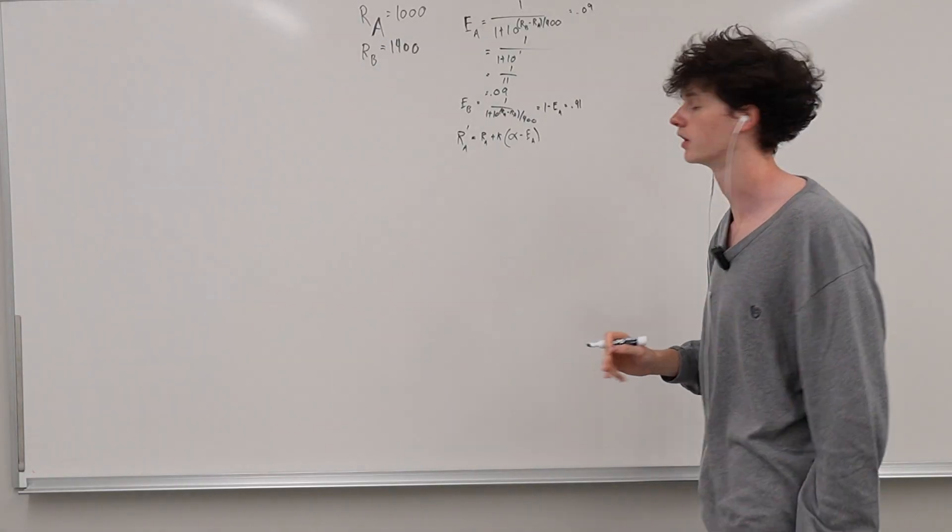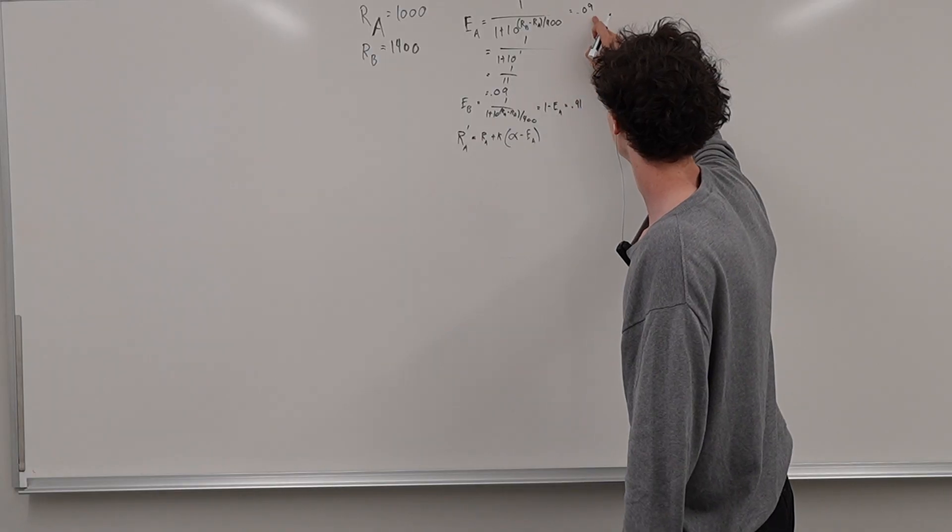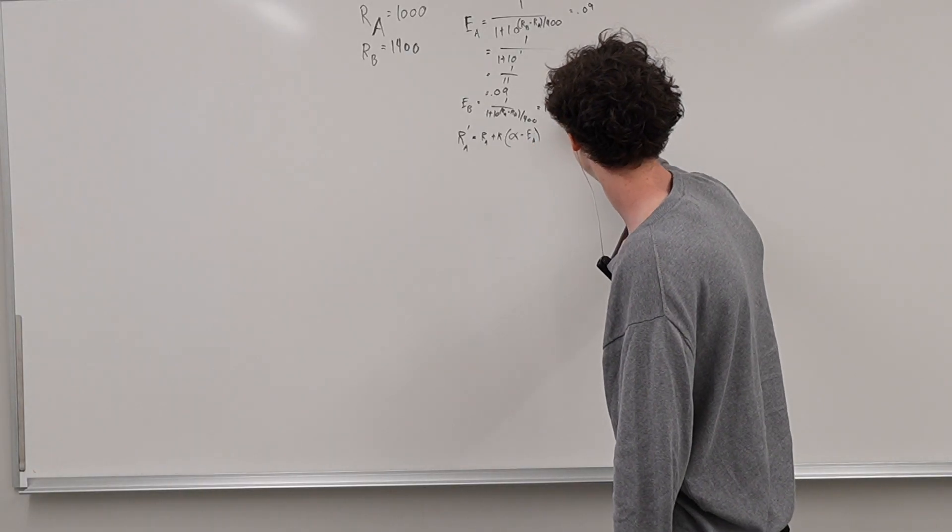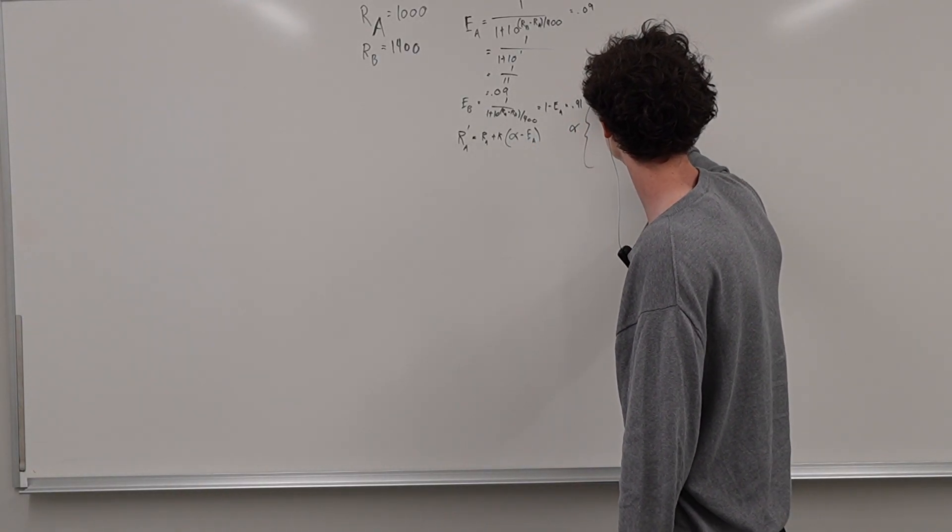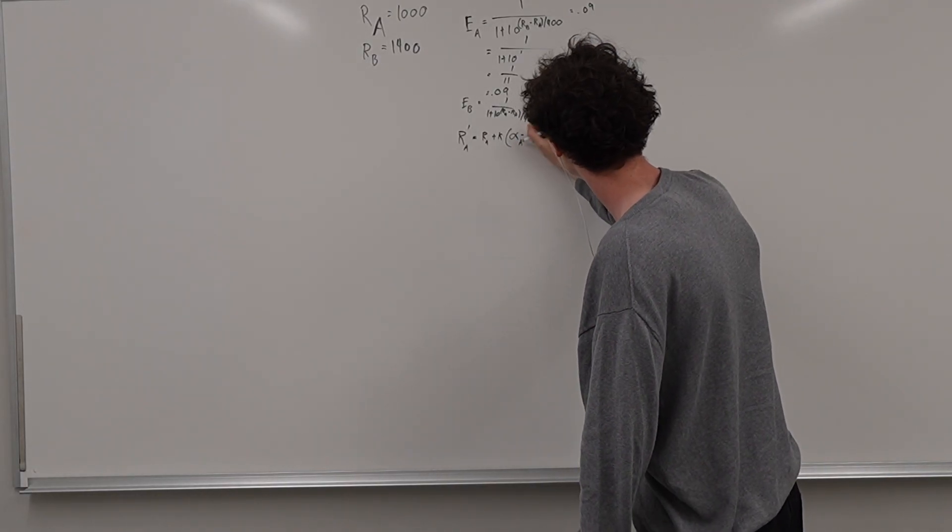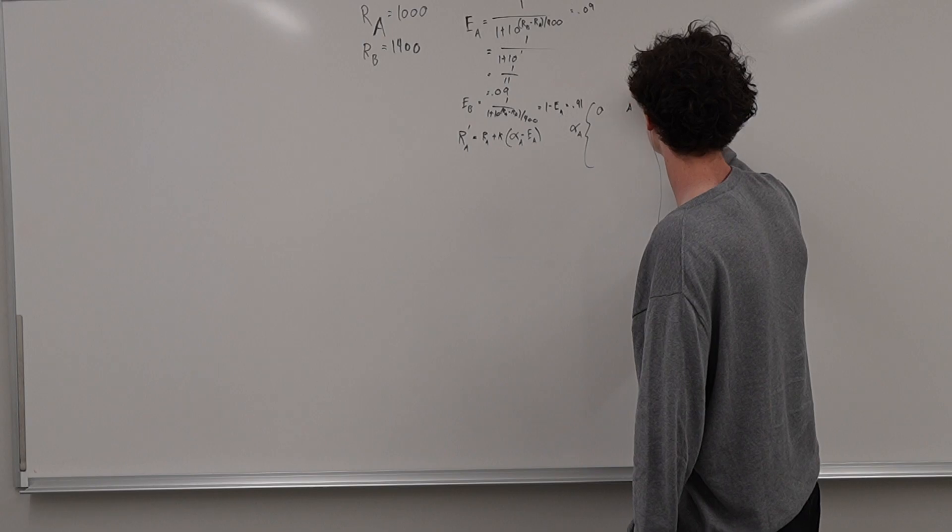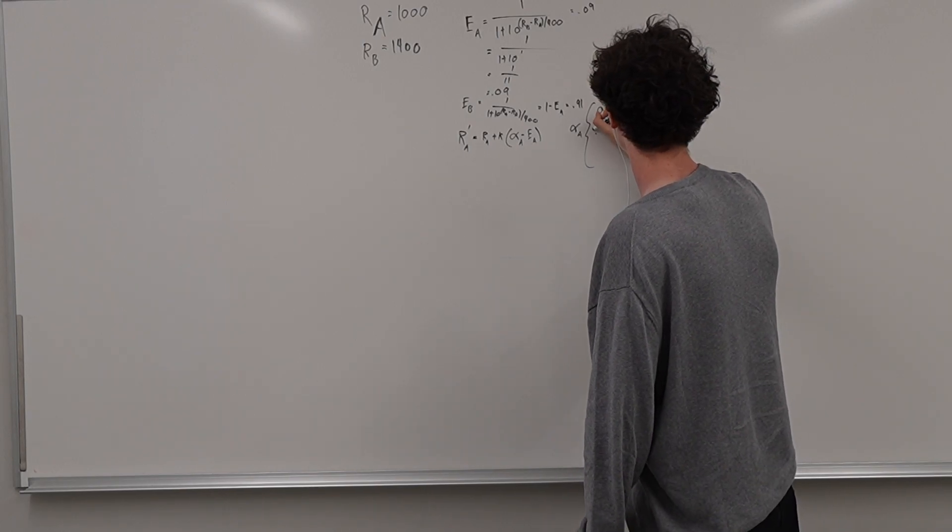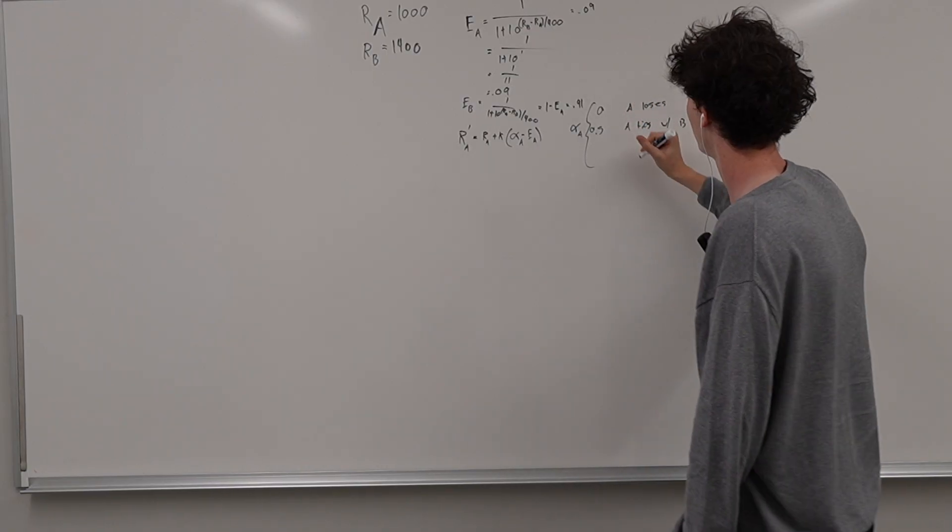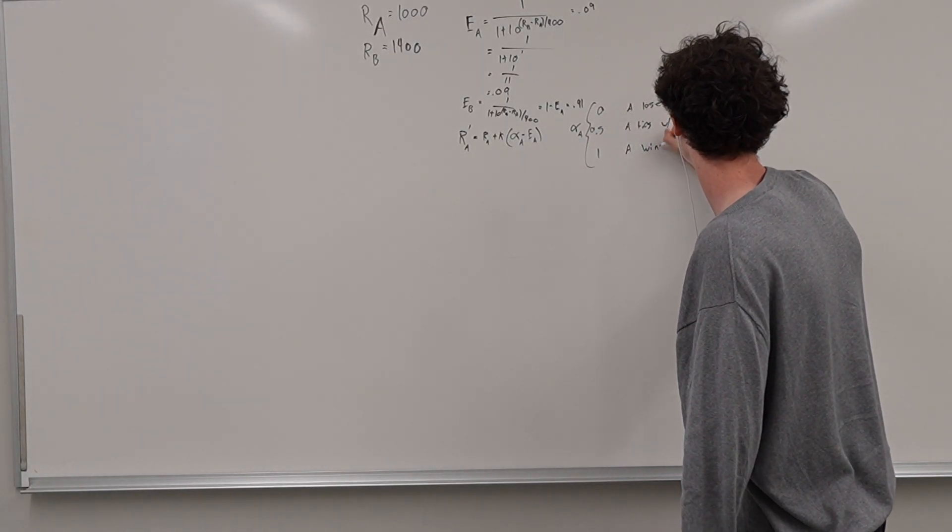Interesting. So what is EA? Well, EA is 0.09. And what is alpha? Alpha is the actual outcome of the match. So alpha is going to be zero if, or this should be alpha A. So it's going to be zero if A loses. It's going to be 0.5 if A ties with B. And it's going to be one if A wins.